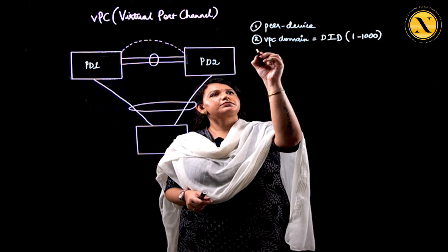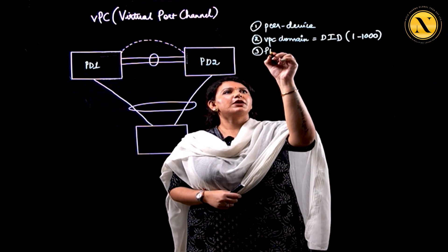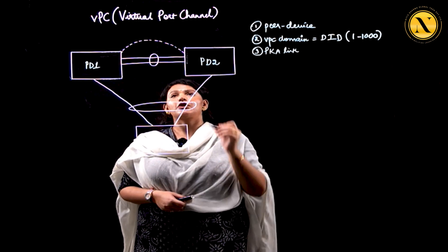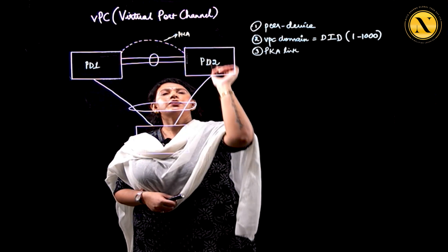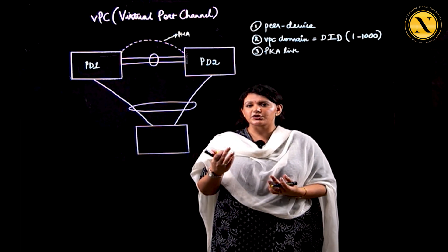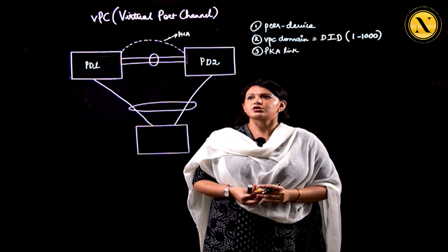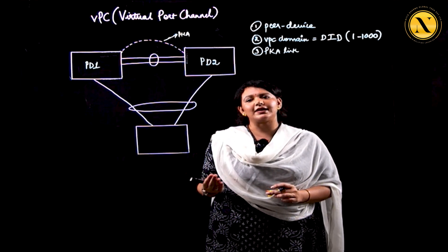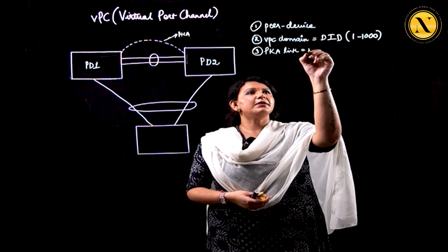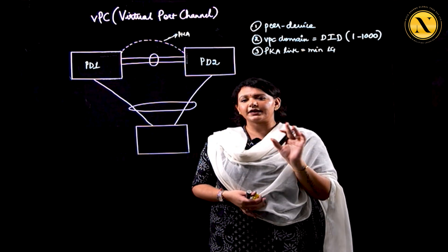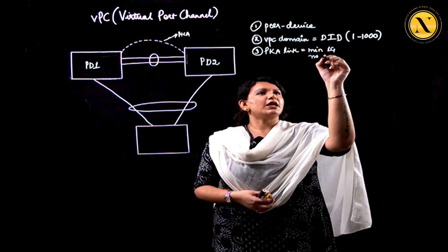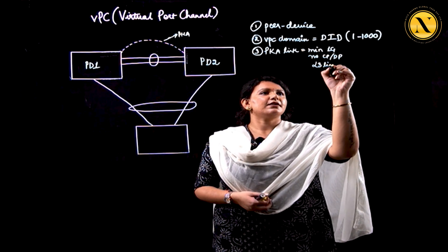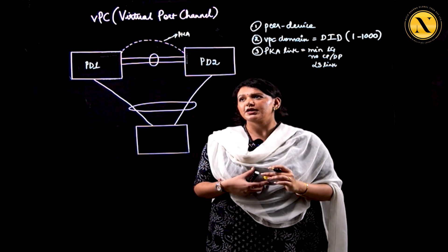The next terminology is peer keep-alive link. This dotted link drawn between the two peer devices is called the peer keep-alive link. As the name suggests, this link is used to exchange keep-alive messages between the two devices — peer device 1 sends keep-alive messages to peer device 2 and vice versa, so each device knows about the aliveness of the other. This link should be a minimum of 1 Gig and carries no control plane or data plane traffic. It is a layer 3 link — essentially a heartbeat link.